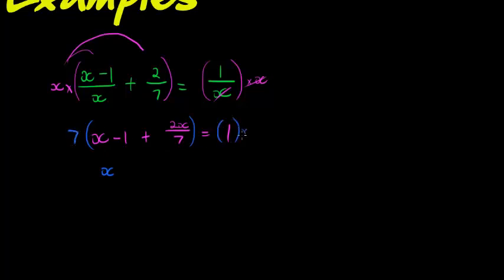So I multiply the left hand side with 7 and the right hand side also with 7. I get 7X minus 7 plus, when this multiplies with the 7, it would just be 2X equals 7. It ends up being 9X equal to 14, so X is equal to 9 over 14.